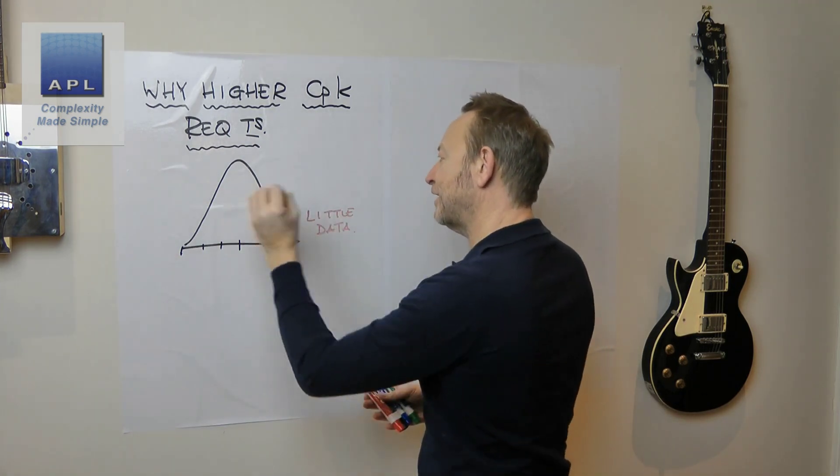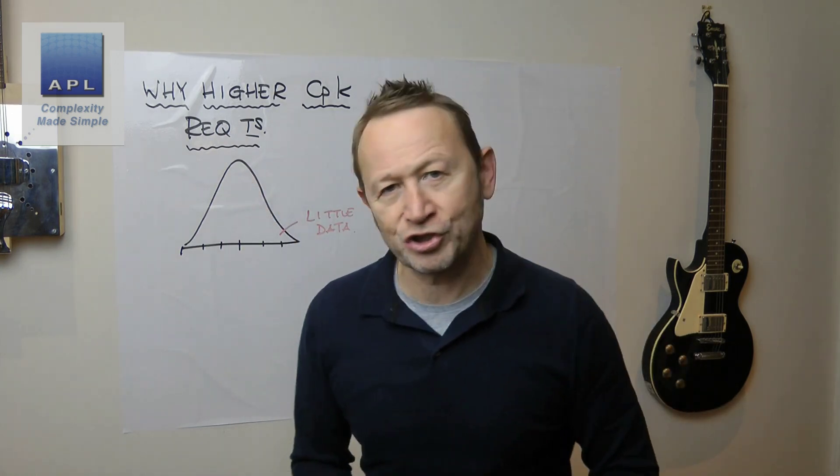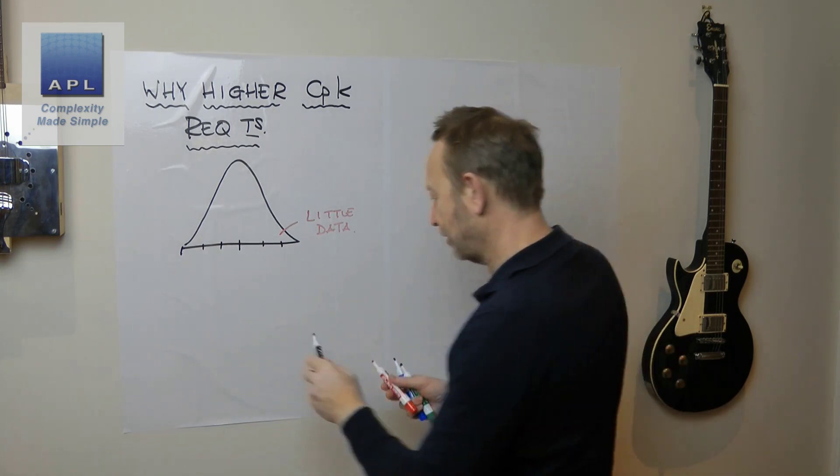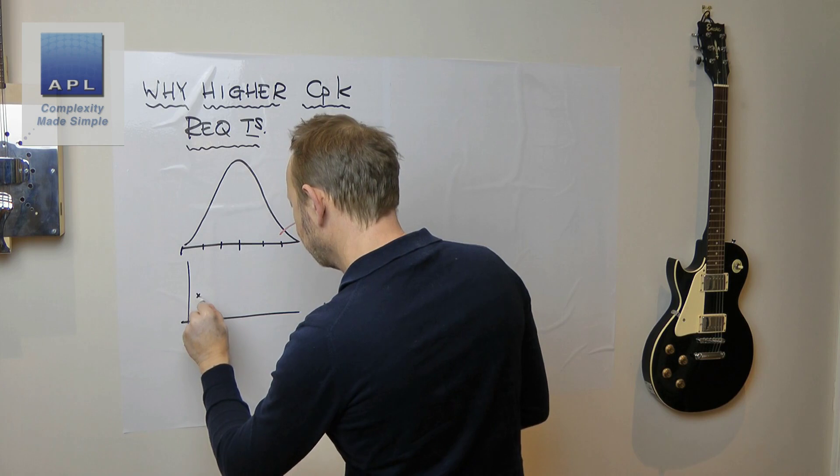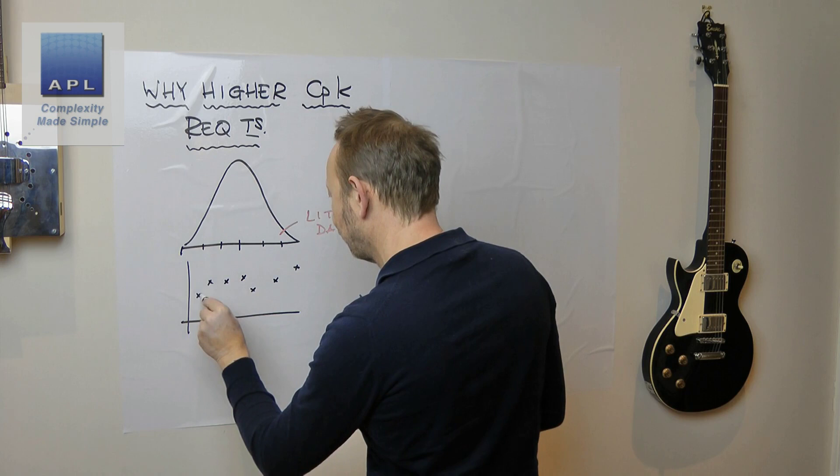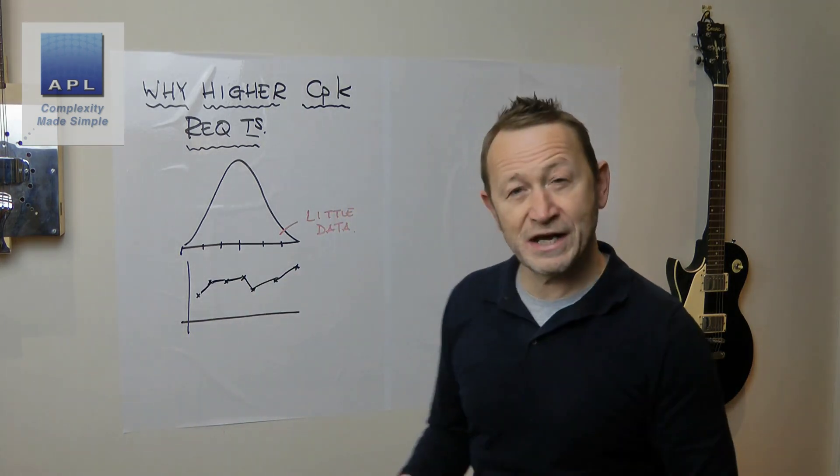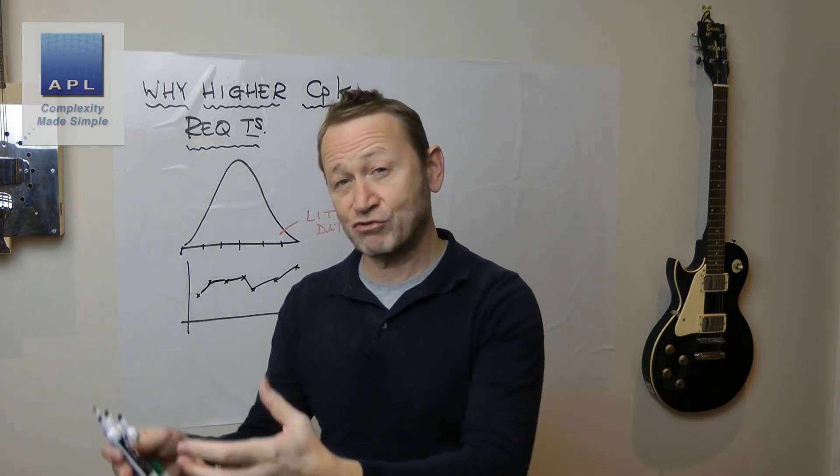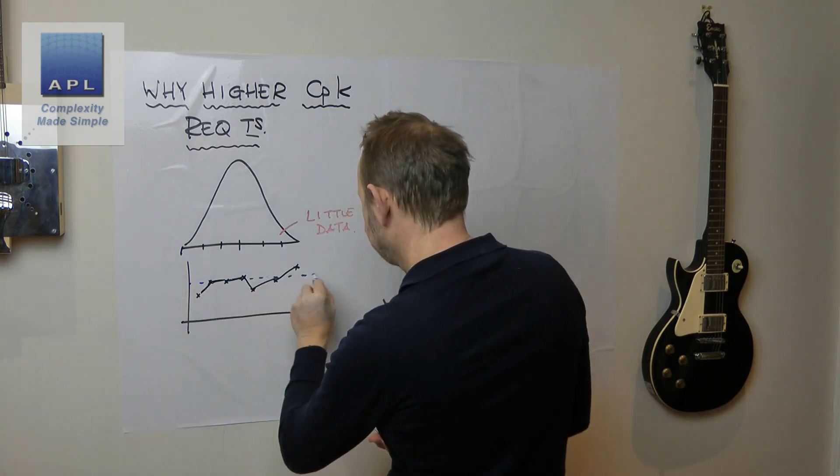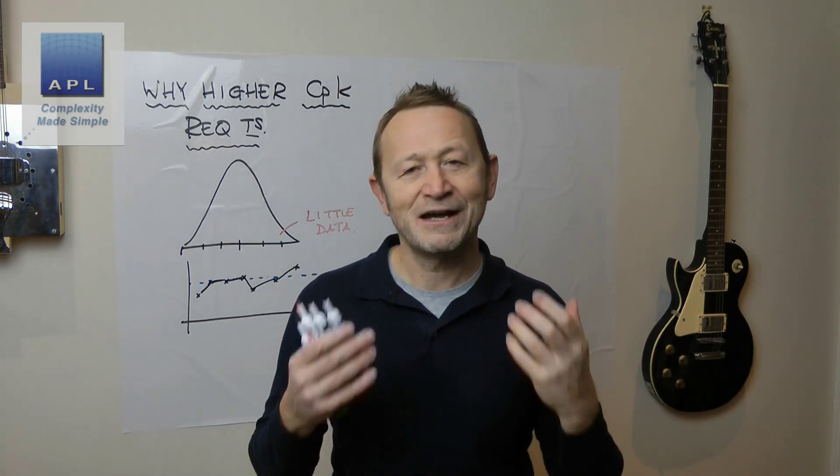If you were taking data points, and remember, as an operator, as a technician, as an engineer, you never see the normal distribution. What you see are individual data points appearing on a graph. The graph is telling you what the process is doing, trying to tell you whether the process is centered, if you're trying to hit some target.